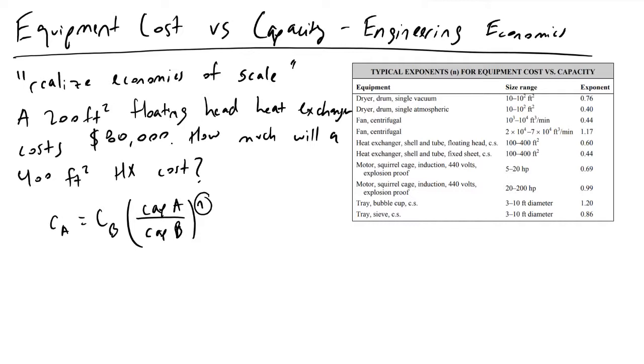And so in this case, I'm going to let A, the variable A, denote our 400 square foot reactor. So we're solving for CA, the cost to actually build this 400 square foot heat exchanger.